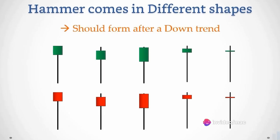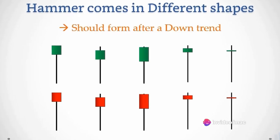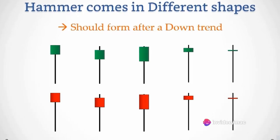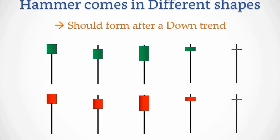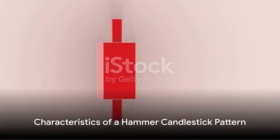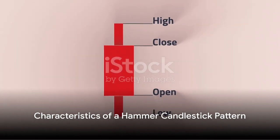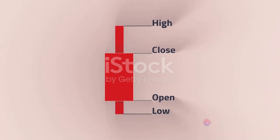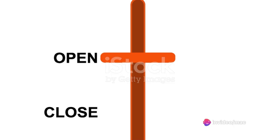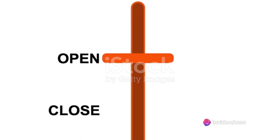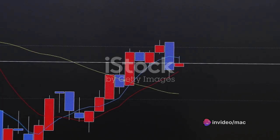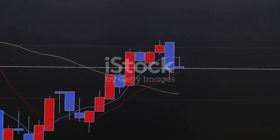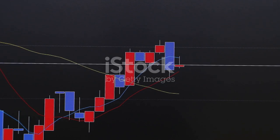Its name, hammer, comes from its shape, which looks like a hammer with a long handle and a small head. Imagine a single candlestick, small in body, either red or green, depending on whether it's bearish or bullish. The most defining feature of a hammer is its long lower shadow, or wick, which should be at least twice the length of the body.